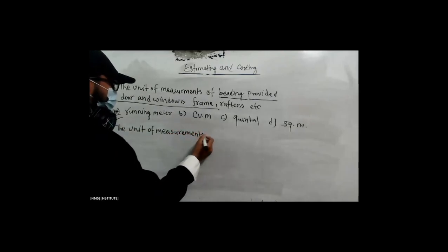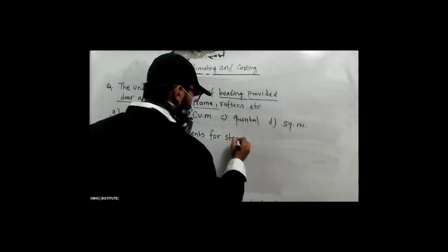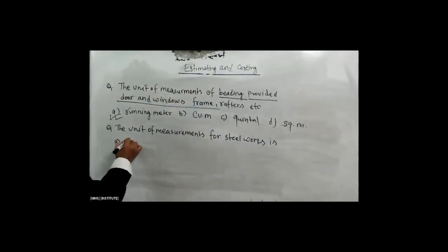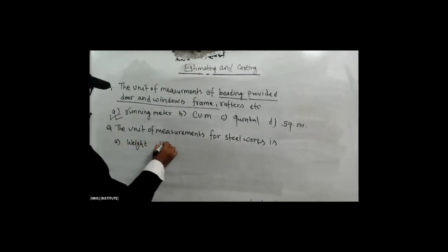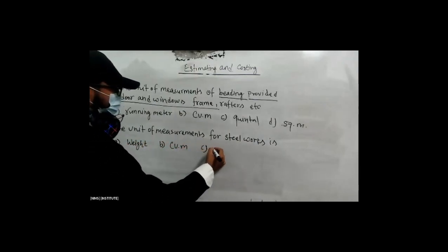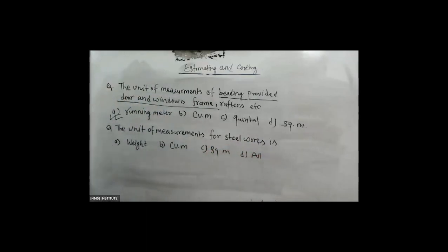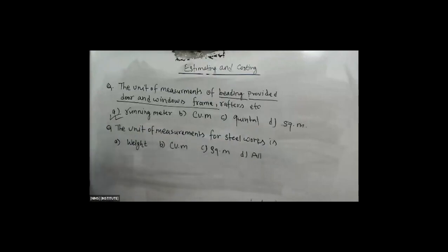The unit of measurement for steel works: Option A — white, Option B — cubic meter, Option C — square meter, and Option D — all. What do we have to do? Quintal. You can see all — white as well, and in this case we need to look at Quintal. The answer is the answer.